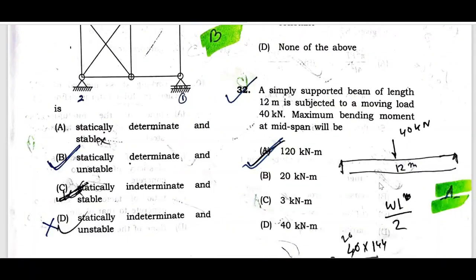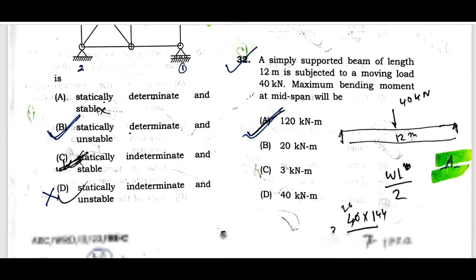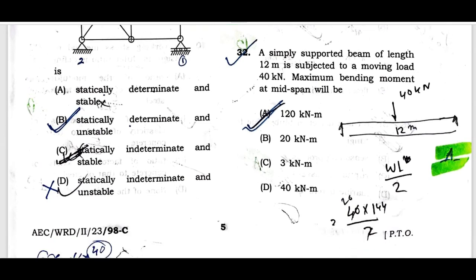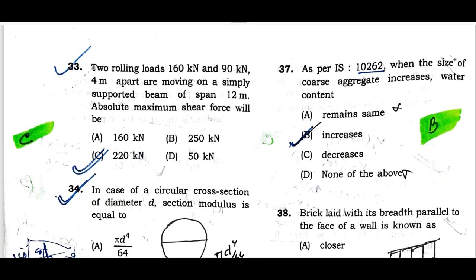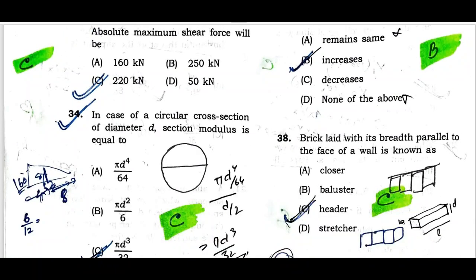Question number thirty-two: A simply supported beam of length 12 meters is subjected to a moving load of 40 kilonewtons. The maximum bending moment at mid-span is 120 kilonewton-meters. Question number thirty-three: Two rolling loads of 160 kilonewtons and 90 kilonewtons, 4 meters apart, move on a simply supported beam of span 12 meters. The absolute maximum shear force will be 220 kilonewtons.